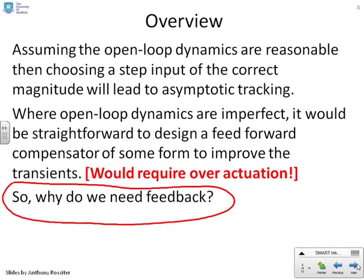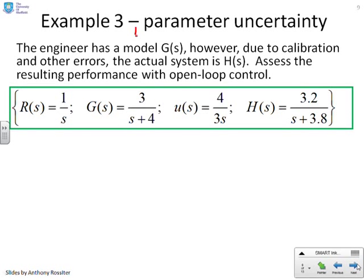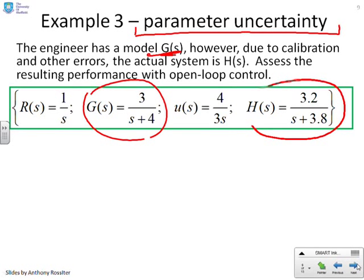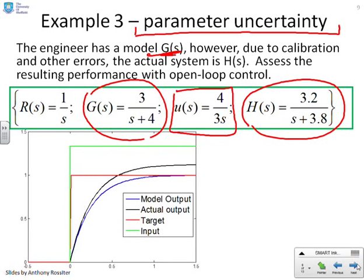Here's why. What we're going to do next is introduce parameter uncertainty. The engineer thinks that the system has a model G(s), which they can write down. Here it is, G(s) equals 3 over s plus 4. But in fact, the real system is H(s), and you'll notice the parameters in H(s) are slightly different. This is very common. You very rarely can get the parameters of a model exactly for a real system. Now we want to assess how this open-loop control law, U equals 4 over 3s, performs for the actual system as opposed to the model. Here we go. The actual system has gone to a different steady state. It has not tracked the target, because the input we've used is based upon the model parameters. The model parameters are only estimates. If they're wrong, then the steady-state value of the input will be wrong, and so the output will be wrong.